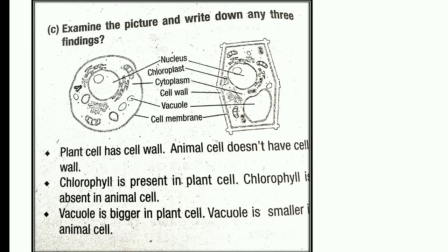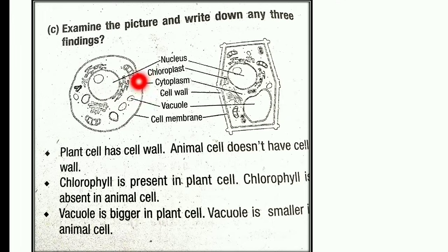Plant cell has a cell wall. Chlorophyll is present in plant cells. Vacuole is bigger in plant cells. The nucleus is the center of the cell.